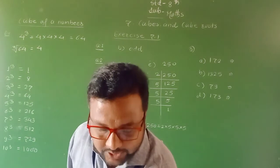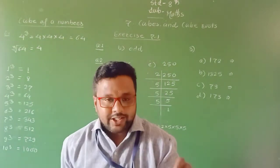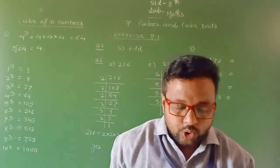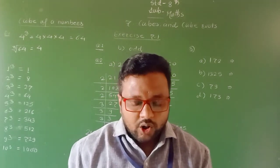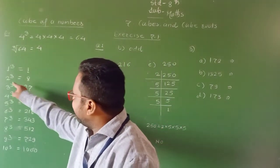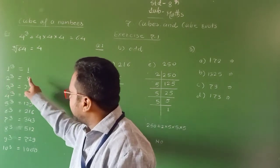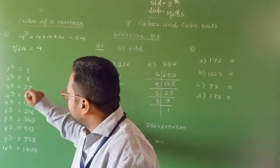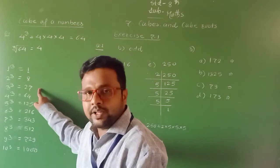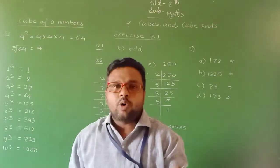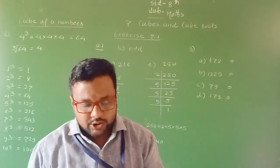Now I am going to explain the properties of cubes of numbers. The first property: cubes of all even numbers are even, and cubes of all odd numbers are odd. For example, 2 cube is 8, which is even. Similarly, 3 cube is 27, which is odd. Cube of an even number is even, and cube of an odd number is odd. This is the first property.